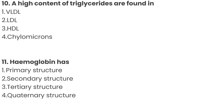Question number 10: a high content of triglycerides are found in? Option 1: VLDL, Option 2: LDL, Option 3: HDL, Option 4: Chylomicrons. The correct answer is Option 4: Chylomicrons.